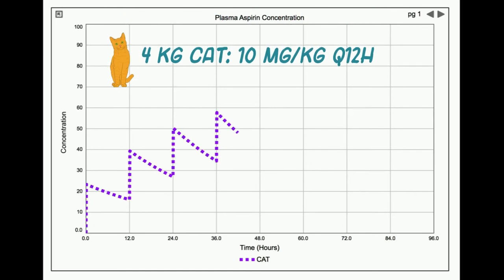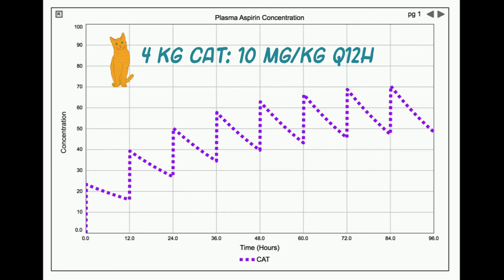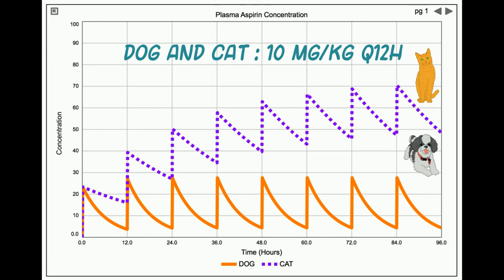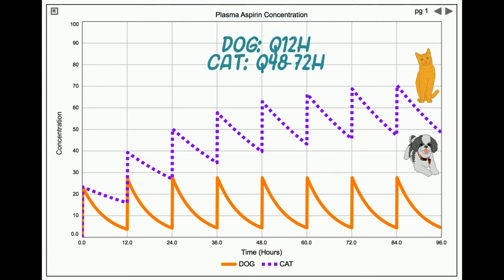Now let's take a look at the same dosage given to a four kilogram cat. The cat's concentrations continue to accumulate because the rate of elimination is five times slower than in the dog, and the accumulation of drug continues to a concentration well above that seen in the dog. In clinical practice, this is why we space dosing aspirin in the cat to every 48 to 72 hours — four to six times less frequently than in the dog. So the drug can be safely administered, but only when you account for its elimination rate. This also explains why many non-steroidal anti-inflammatory drugs like aspirin are more toxic in cats and consequently are contraindicated in this species.